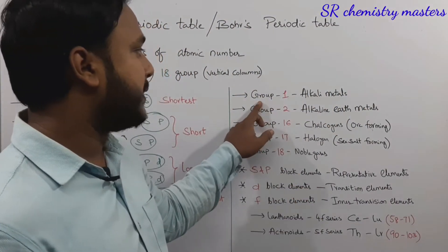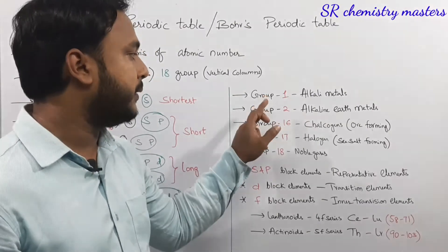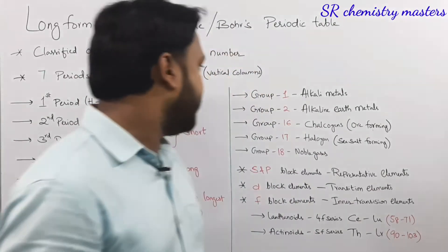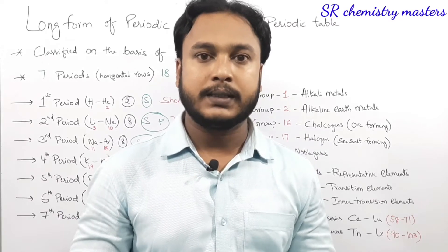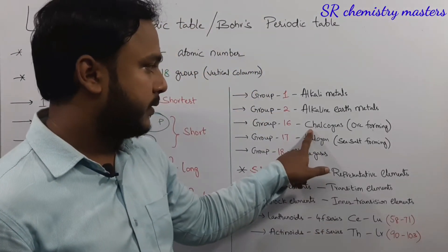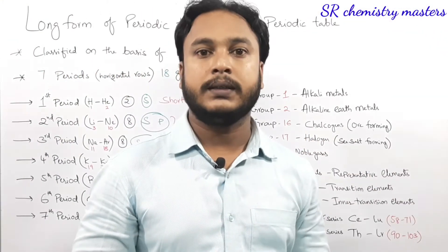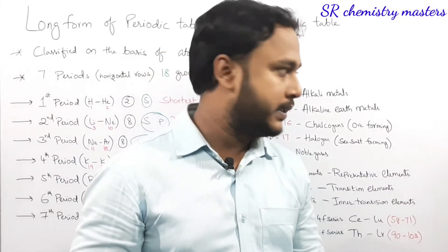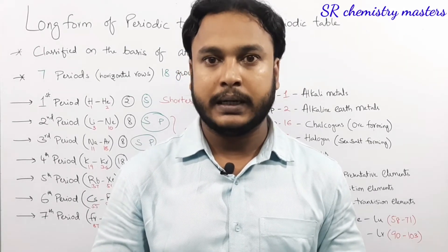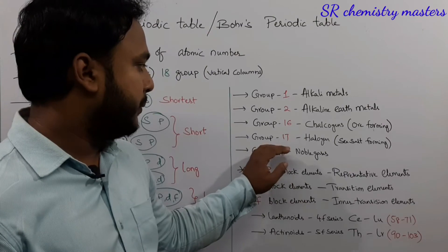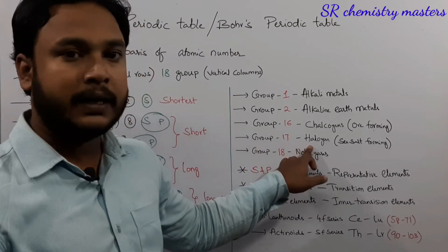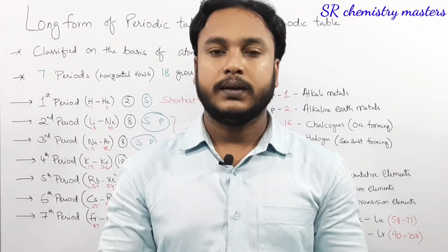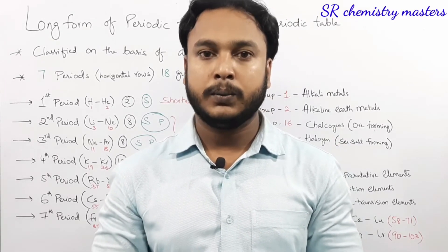Some of the groups have their individual names. The first group elements are considered as alkali metals, and the second group elements are considered as alkaline earth metals. These two groups belong to the s block. Group 16, in which the oxygen atom is present, is known as chalcogens, as the elements in this group are mostly ore-forming or mineral-forming elements. Group 17 elements — fluorine, chlorine, bromine, iodine, and astatine — are considered as halogens, as they are salt-forming elements. The 18th group elements are considered as noble gases.